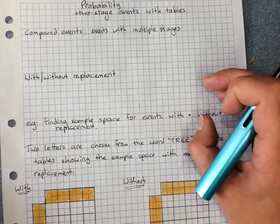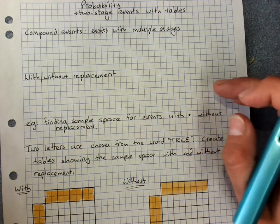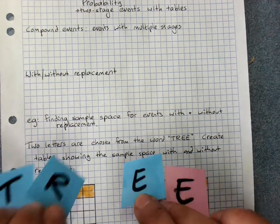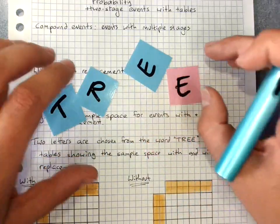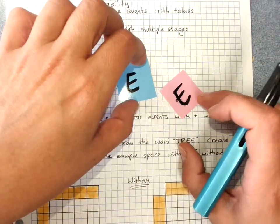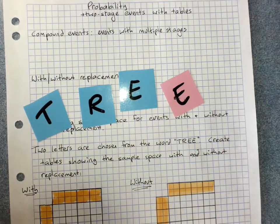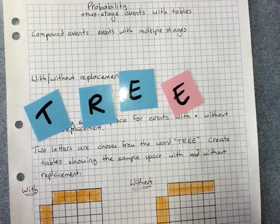We do need to talk about the concept of whether the events are with or without replacement. We're choosing a letter from the word tree. The compound event will be you choose one letter, and then you choose another letter.